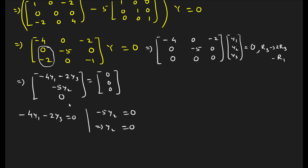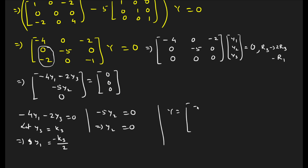After multiplying, we get two equations: −4Y1 − 2Y3 = 0 and −5Y2 = 0. From the second equation, Y2 = 0. We have three variables and two equations, so one variable is free. Let Y3 = K3. Then from −4Y1 = 2Y3, we get Y1 = −K3/2. So the characteristic vector for λ = 5 is Y = [−K3/2, 0, K3]ᵀ.